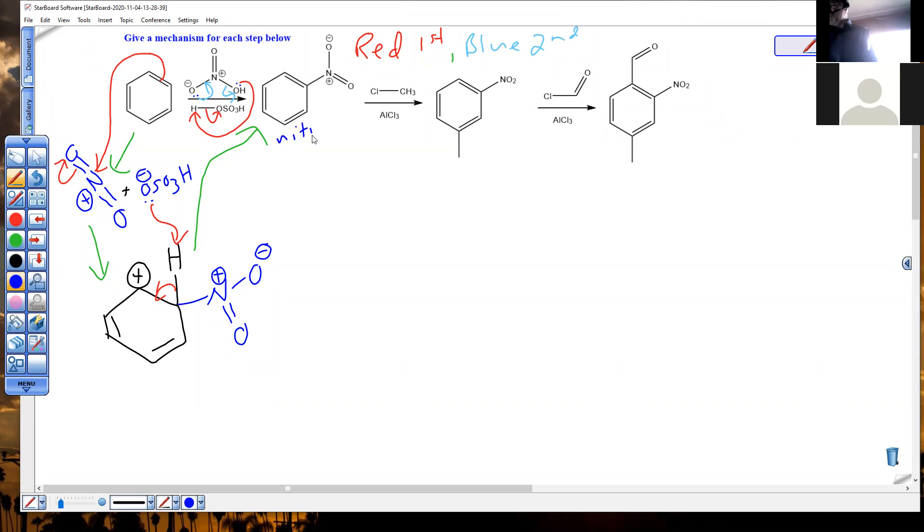Nitro is one of our new groups. We gotta know how to draw it. We have to know how to name it. Nitrobenzene itself is a very common solvent for a lot of reactions. It has a nice high boiling point. So if you have a high activation energy, you can use nitrobenzene as your solvent.